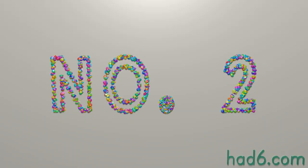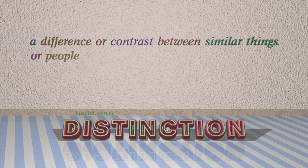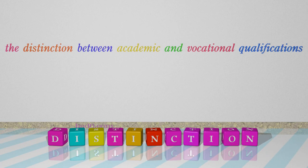Number 2: Distinction, which means a difference or contrast between similar things or people. For example: the distinction between academic and vocational qualifications.